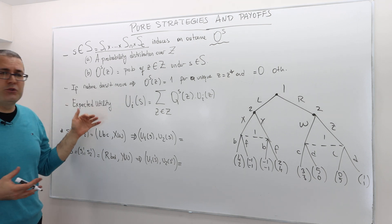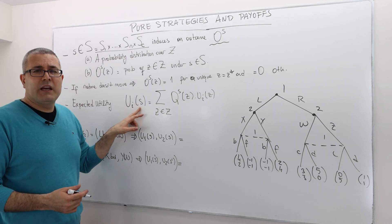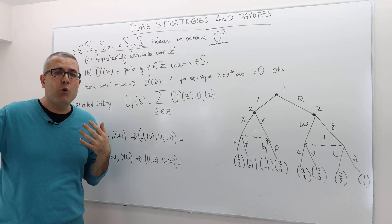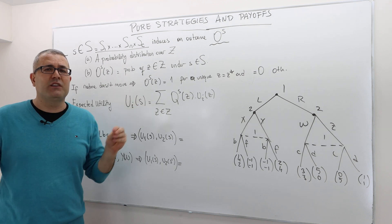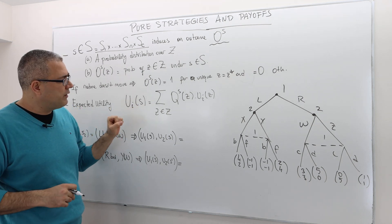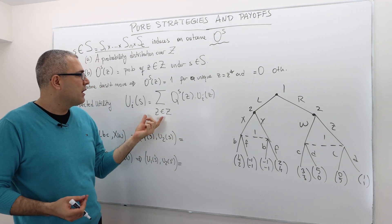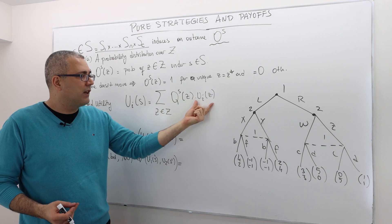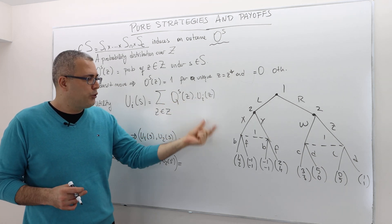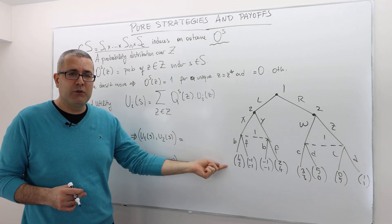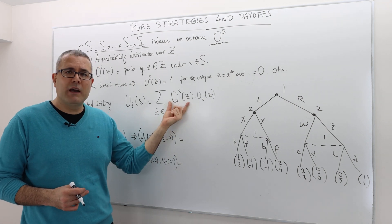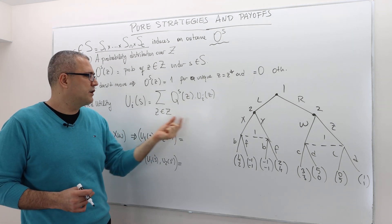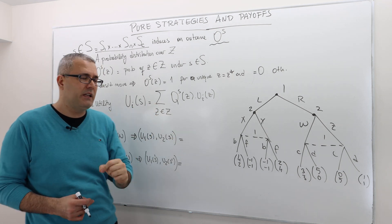The expected utility of playing strategy profile S — and remember, we cannot calculate a player's expected utility without knowing the others' strategies, so we need the full strategy profile — is calculated by summing over all terminal histories: we multiply the utility that player i gets after terminal history z by the probability that history z occurs under S, and sum those up.